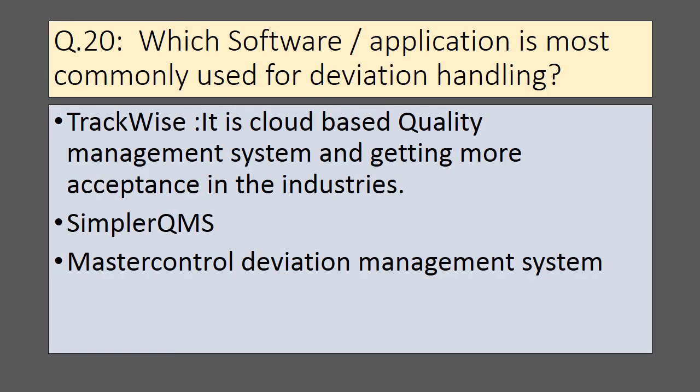Which software or application is most commonly used for deviation handling? TrackWise is most commonly used for deviation handling. It is a cloud-based quality management system gaining more acceptance in the industry. Along with TrackWise, other applications such as SimplerQMS and MasterControl deviation management system are also in use.